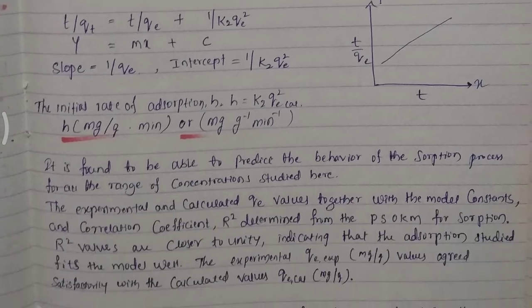It is found to be able to predict the behavior of the sorption process for the range of concentrations studied. The experimental and calculated qe values, together with the model constants and correlation coefficient R², are determined from the pseudo second order kinetic model. R² values closer to unity indicate that the adsorption studies fit the model well. The experimental qe values agreed satisfactorily with the calculated values.